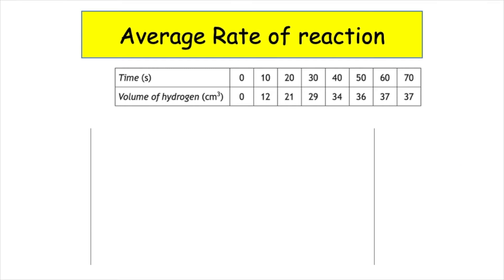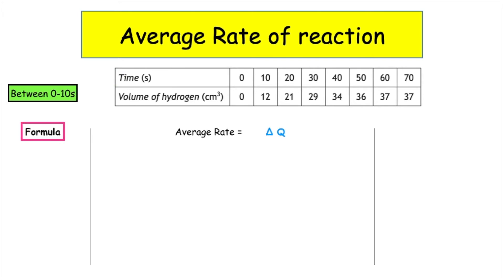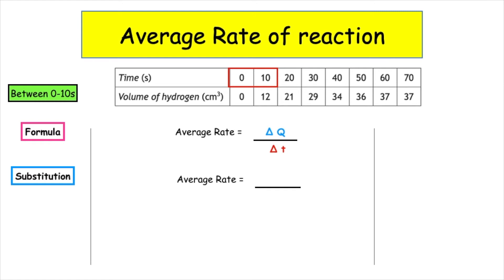Let's have a go at calculating the average rate of a reaction when given a table of results. For the first example, we're going to be given the time interval between 0 and 10 seconds. The first thing we have to write down is our formula, which is average rate is equal to change in quantity over change in time. We then substitute the values given in the question. The time interval we've been given is 0 and 10. We always take small numbers away from big numbers, so we write 10 minus 0.